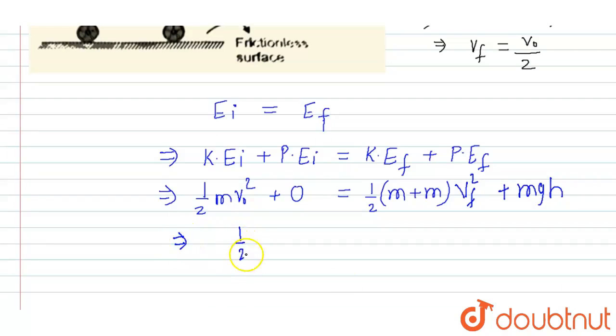Now solving this equation, that is half m v naught square is equal to half m plus m, 2m into vf. Putting the value of vf equal to v naught by 2, m g, that is v naught by 2 whole square, plus m g h.